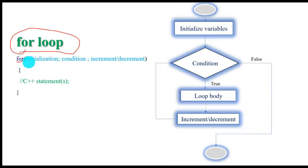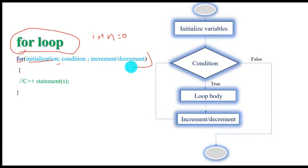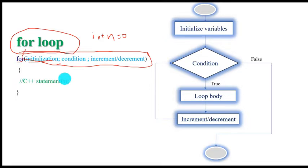The keyword is 'for', then initialization — give an initial value for the variable, for instance int n equals zero. Separated by a semicolon, then there is a condition or test expression, then another semicolon, then auto increment or auto decrement. Under the parentheses you must include these three contents. Within the curly brackets is the body of the loop that we want to execute.